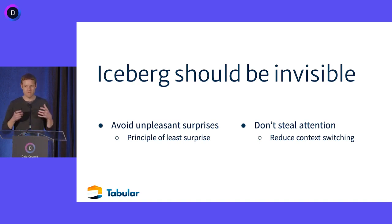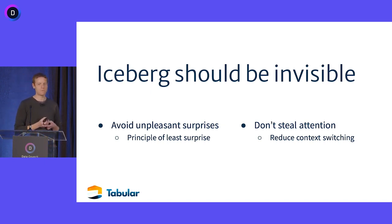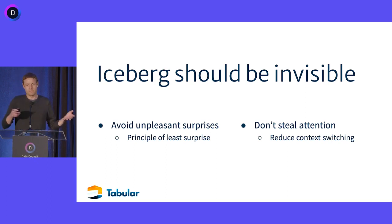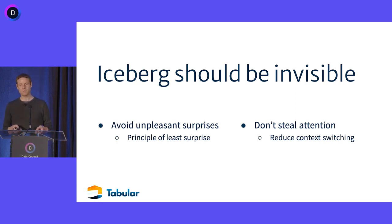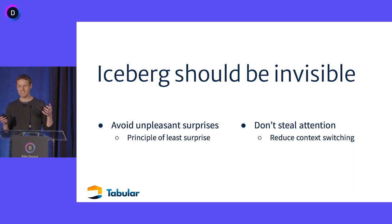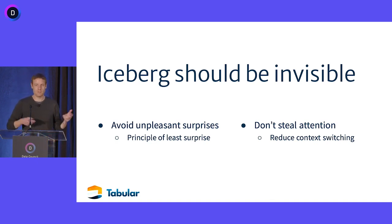Iceberg has this philosophical principle that it should be invisible, and that really comes out in two ways. First, we don't want unpleasant surprises — things like you make a simple change to your table and you've corrupted all your data for all time and have to clean it up. The second is more subtle: we don't want to steal people's attention. This is really the fundamental place where we've failed in the last 10 years — making it so that you had to care very deeply about things like file layouts and capabilities, or how large a table is going to be in three years when you create it and you're just trying to get everything up and running.